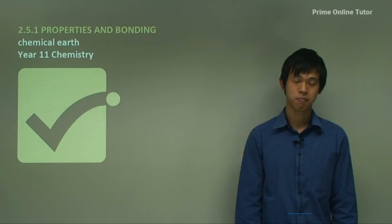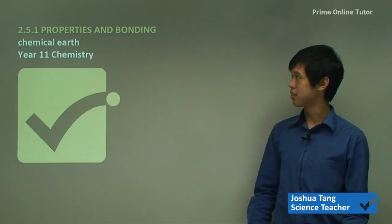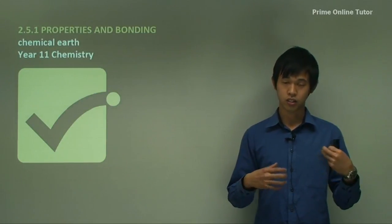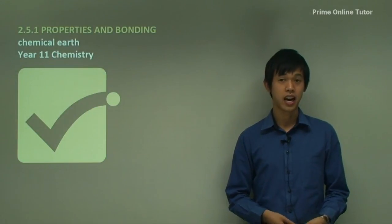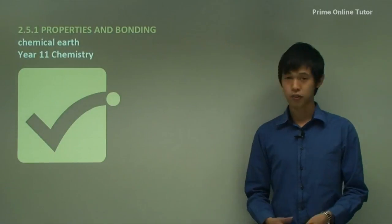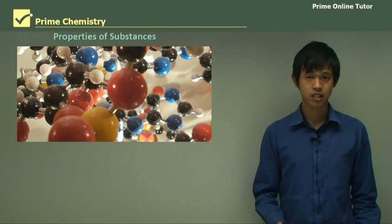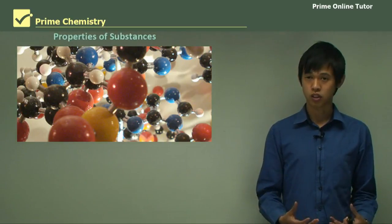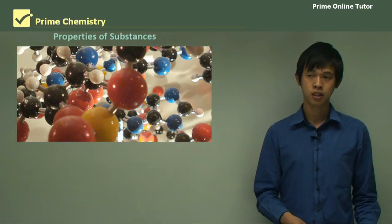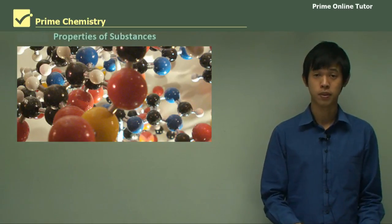Hello everyone, welcome again. Today's lesson will be on the chemical earth in the Year 11 chemistry syllabus, and this series will be on properties and bonding. We're going to look at how elements and compounds bond together and how that alters their chemical and physical properties. But before we go into that, today's lesson is on the properties of substances — what are the general properties of some of the chemicals that we see, and how do we classify certain chemicals so we can group them together and predict their properties.